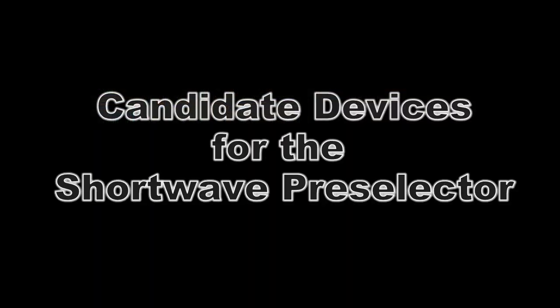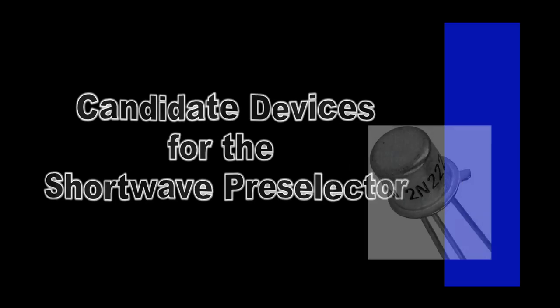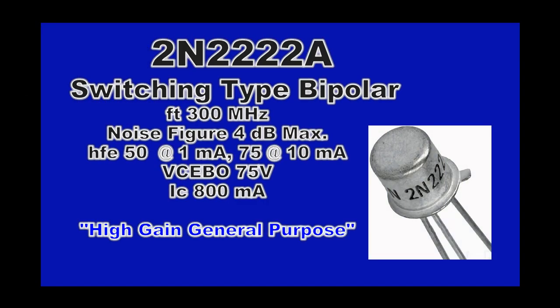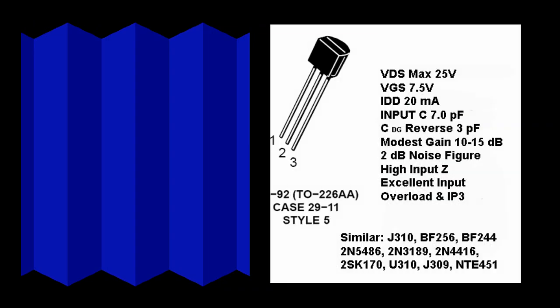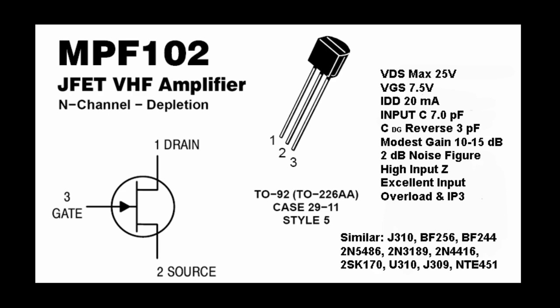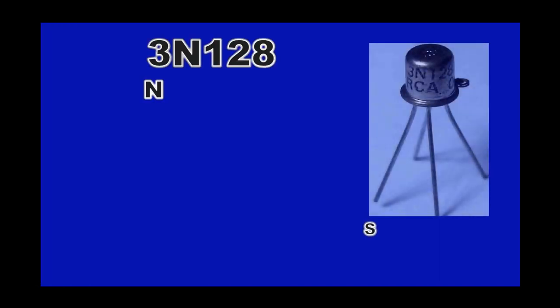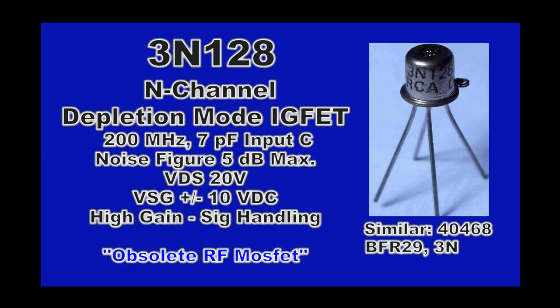The first candidate is our 2N2222 or 3904-style NPN switching transistors, which also are very good general-purpose transistors. The MPF102 and all of the JFETs. We get into the depletion single-gate MOSFETs and the depletion dual-gate MOSFETs, which were very popular in the 70s.